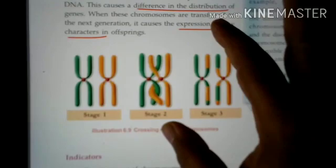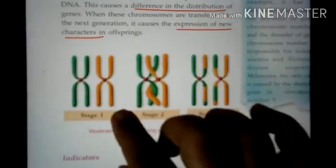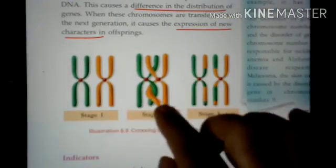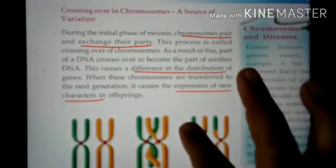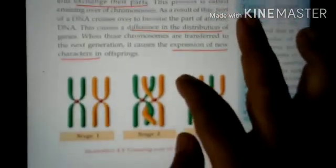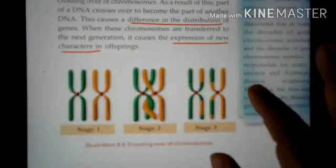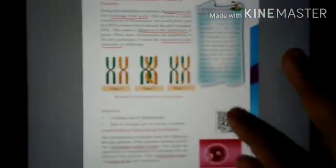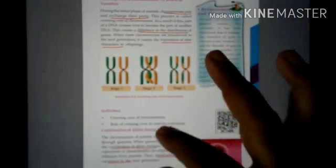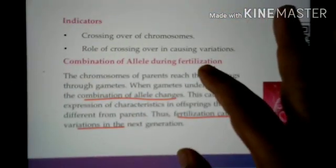One chromosome starts from here. They exchange genes and genetic materials. Alleles can change.